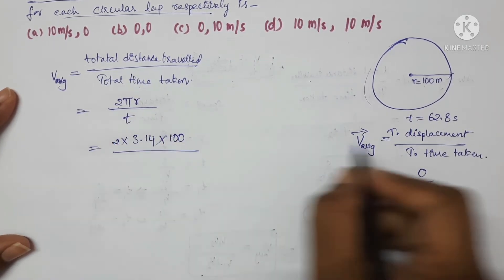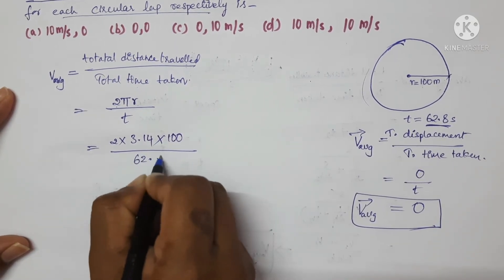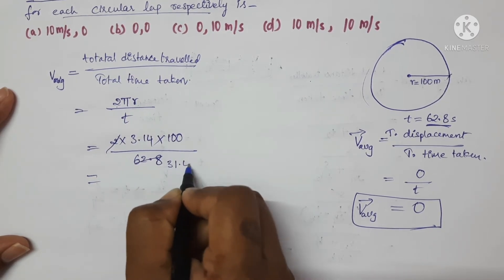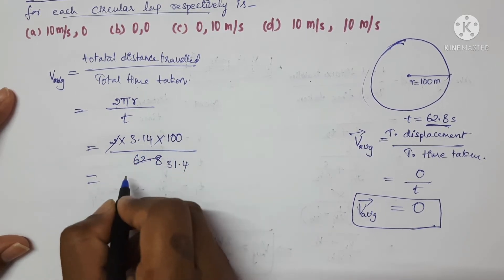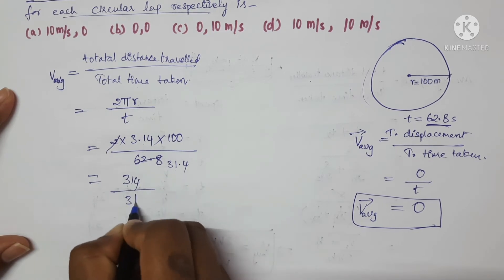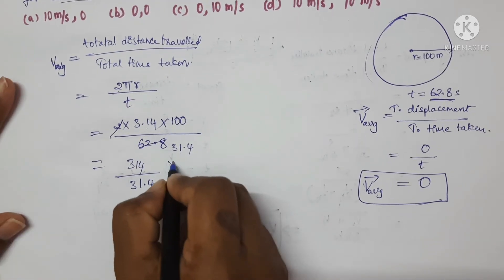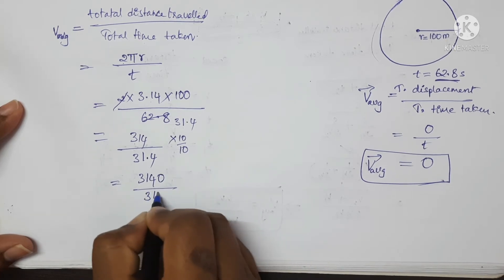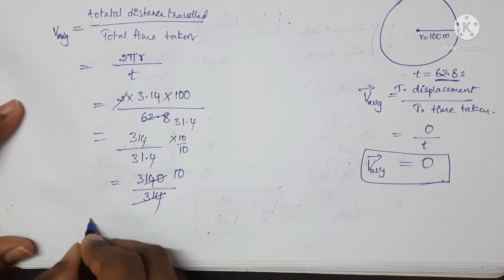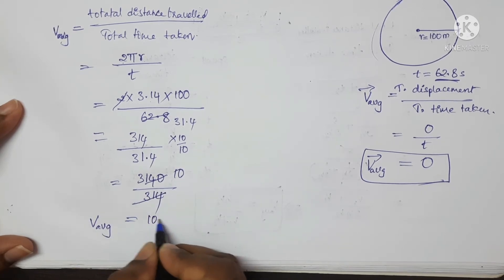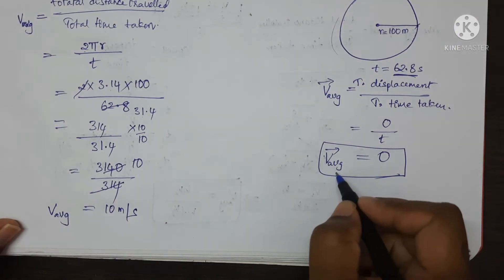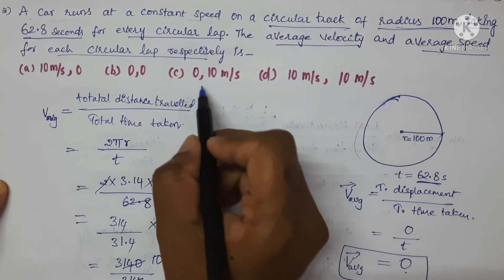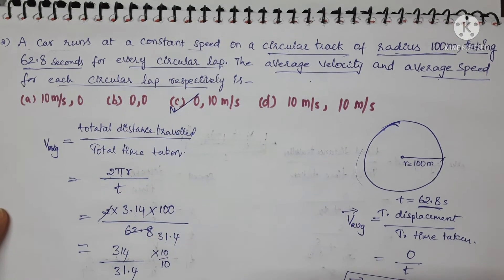Simplifying: 2 × 3.14 × 100 = 628, and 628/62.8 = 10. So the average speed is 10 meters per second. We got average velocity as 0 and average speed as 10 m/s, so option C — 0 and 10 m/s — is the correct answer.